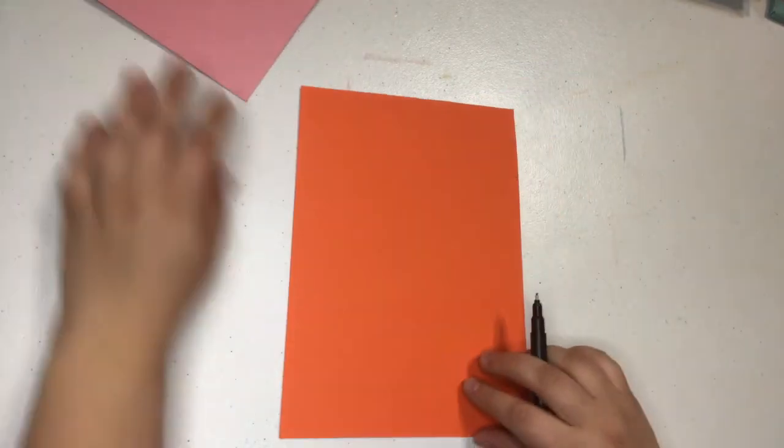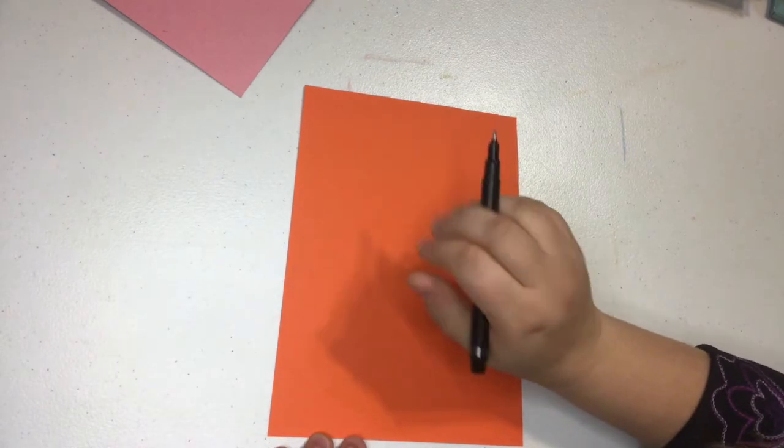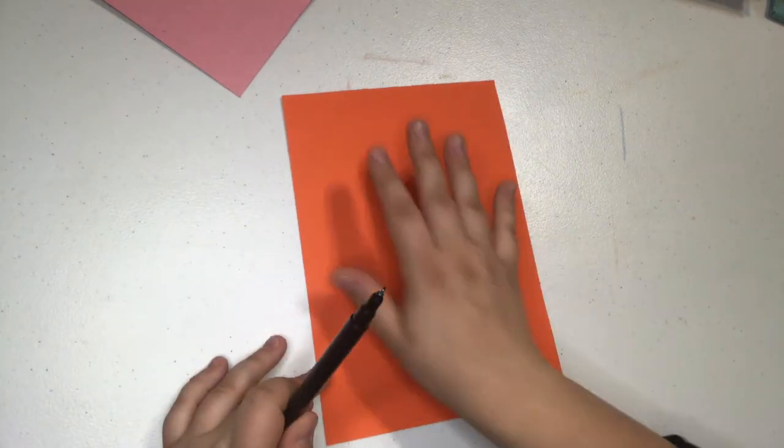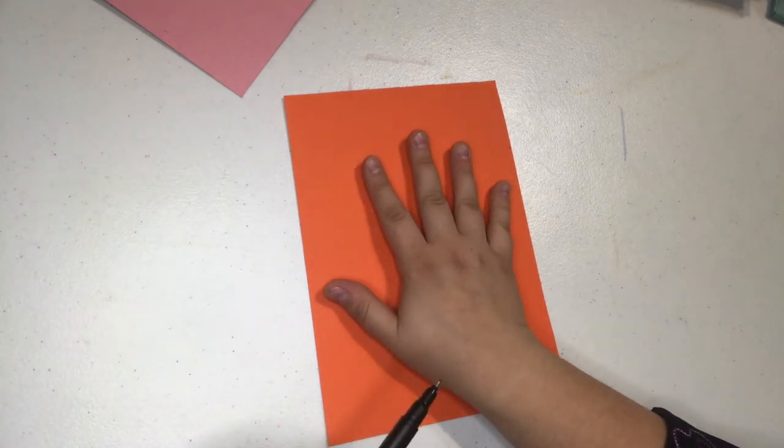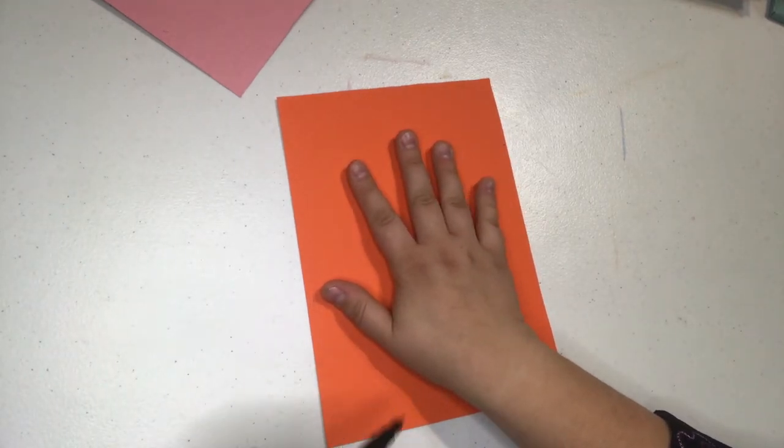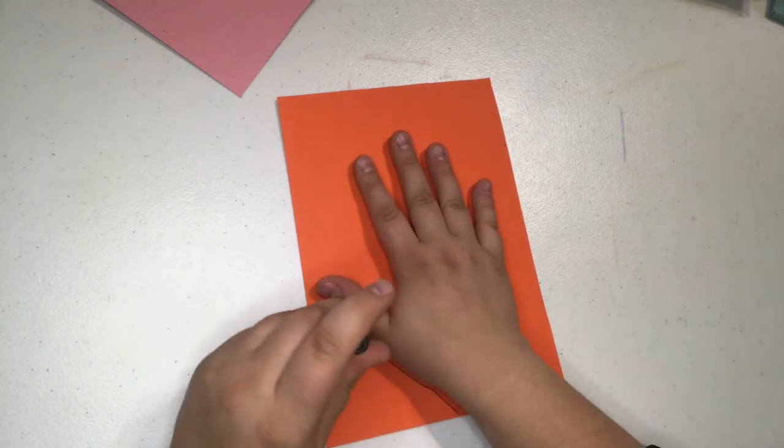Here's where you might need a little bit of help. For this one we are going to trace our other hand, so maybe you traced your left hand, now you're going to trace your right hand. It's okay to ask for help if you need help tracing your other hand.